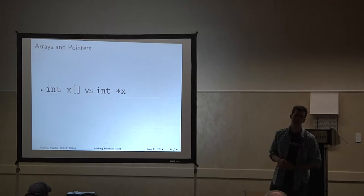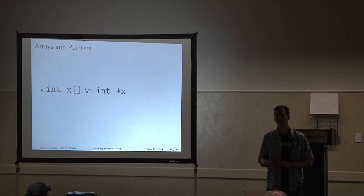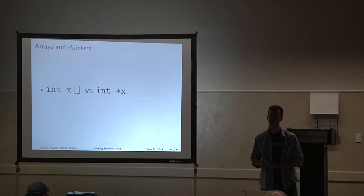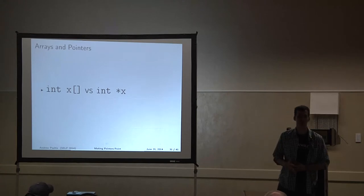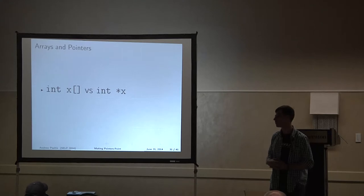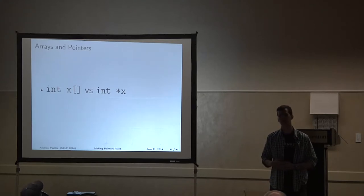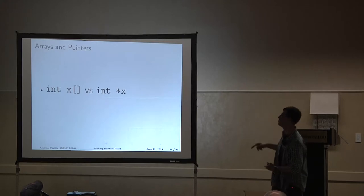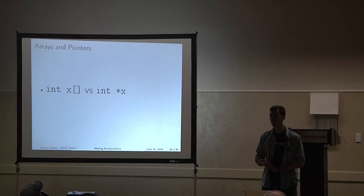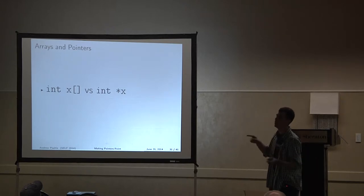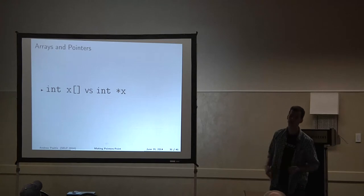When you have a pointer, however, the pointer is just a pointer — it's an integer. When you create variables in C, you need to set them to something, otherwise they will point off into space or just have some random value that is likely not a part of your program. So if you try to dereference a pointer that you just made by saying int star X, it's most likely going to cause a segmentation fault. You often need to have it actually point at something, either by referencing a value or allocating memory to it.